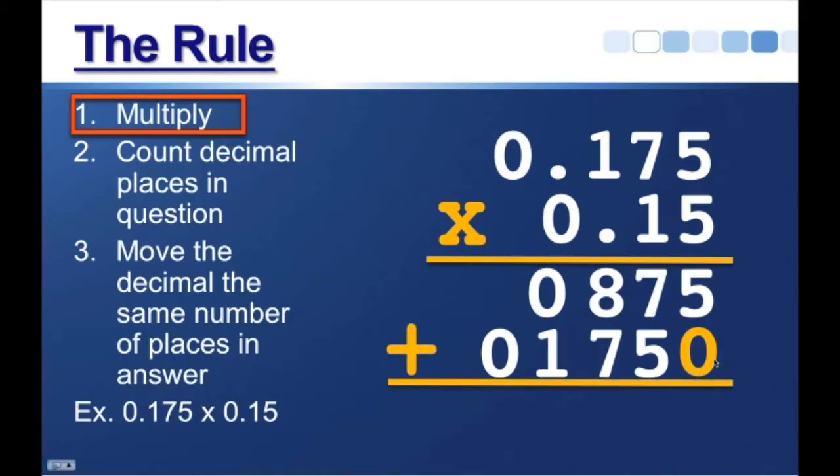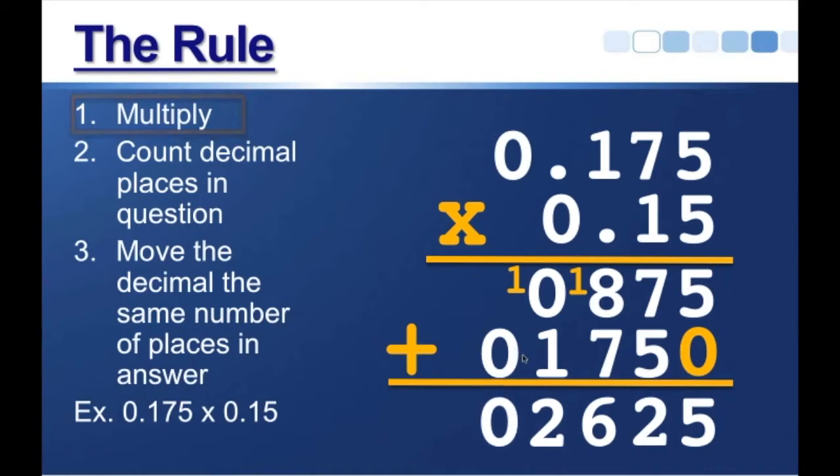So then, with these numbers, we just add them. We've got 5 plus 0 is 5, 7 plus 5 is 12, bring down the 2, carry the 1. 1 plus 8 is 9, 9 plus 7 is 16, bring down the 6, carry the 1. 1 plus 0 is 1, plus this 1 here is 2. And then, we can just bring that 0 down.